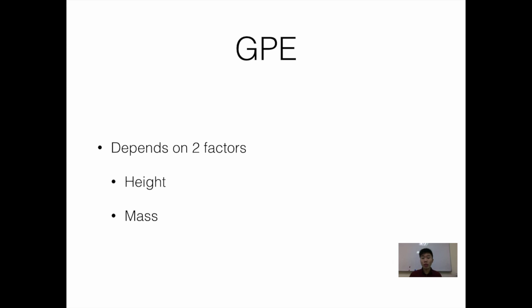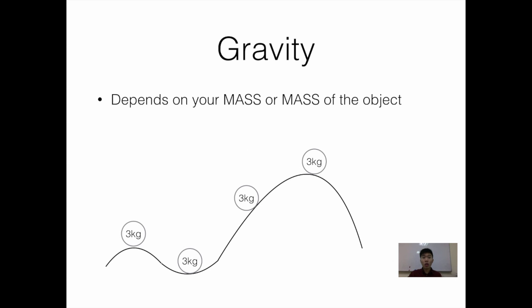This is very different from gravity. Gravity depends on the mass of an object. Unlike gravitational potential energy — where standing on top of a hill at a greater height from the ground gives you more gravitational potential energy — for gravity, even if you are standing on top of the hill at a greater height from the ground, the gravity acting on you will be the same at any point, because gravity depends on mass and your mass does not change.